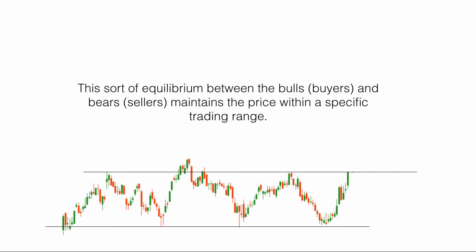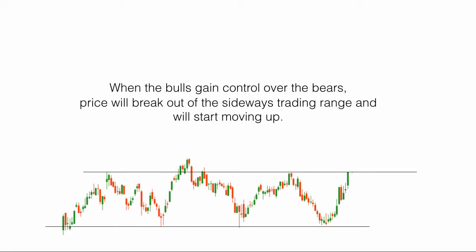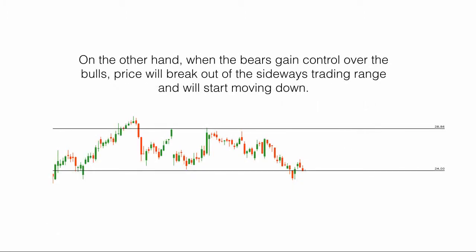This sort of equilibrium between the bulls, the buyers, and the bears, the sellers, maintains the price within a specific trading range. When the bulls gain control over the bears, price will break out of the sideways trading range and will start moving up. On the other hand, when the bears gain control over the bulls, price will break out of the sideways trading range and will start moving down.